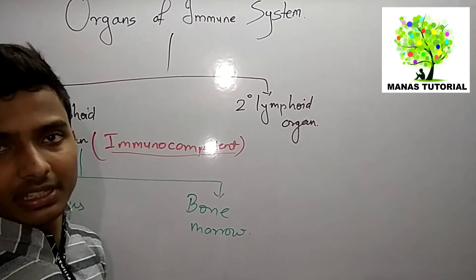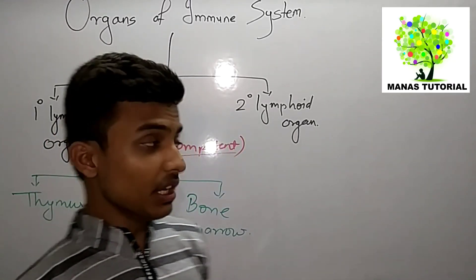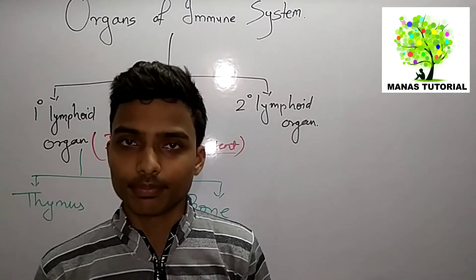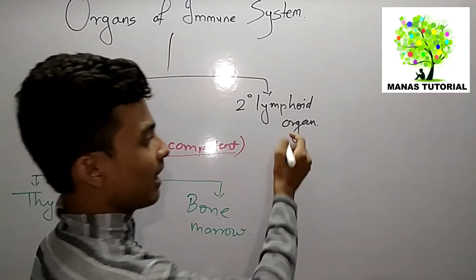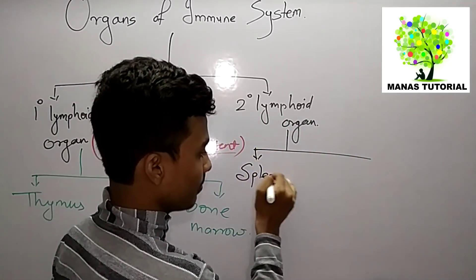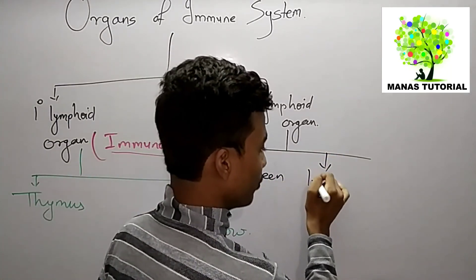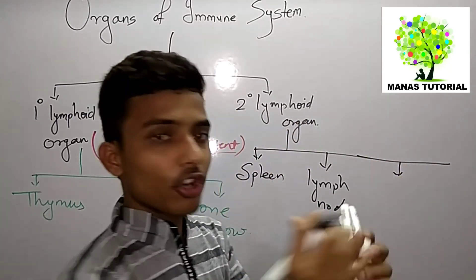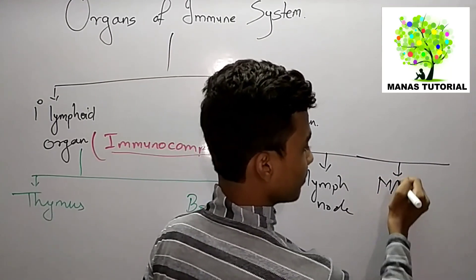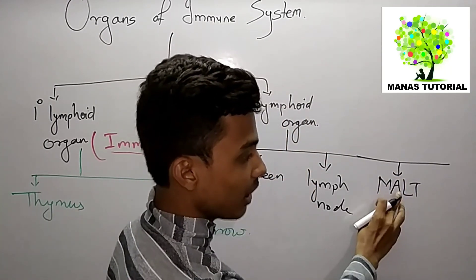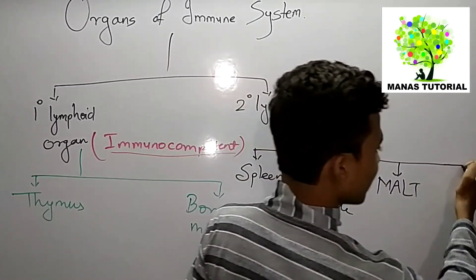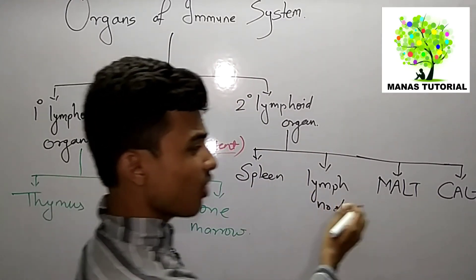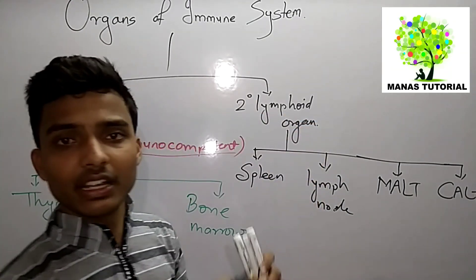The secondary lymphoid organs are the organs which help in countering the cells of the immune system to the antigen. These organs are the spleen, lymph nodes, and other associated tissues such as mucosal-associated lymphoid tissue (MALT).